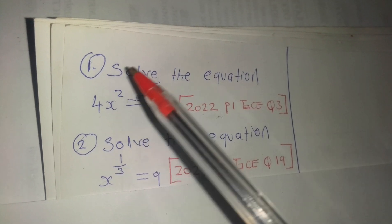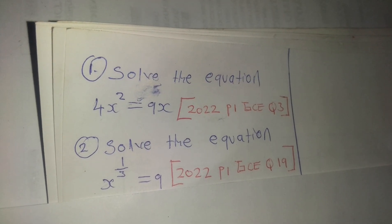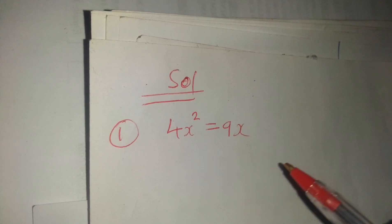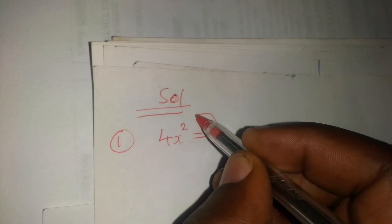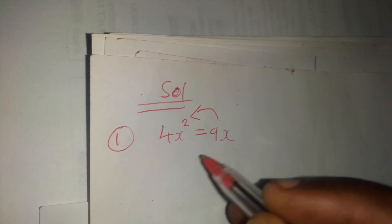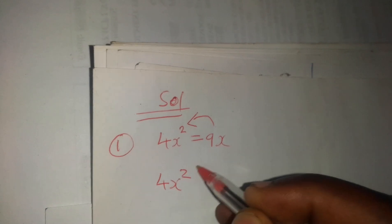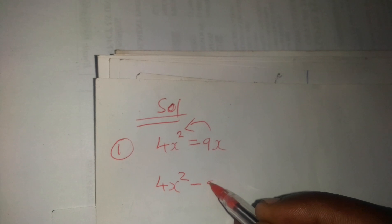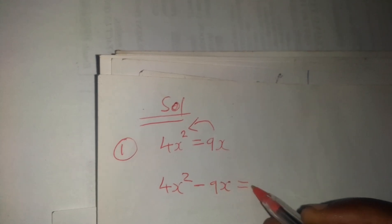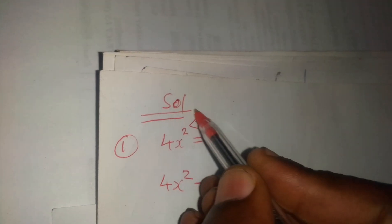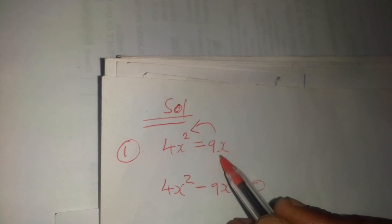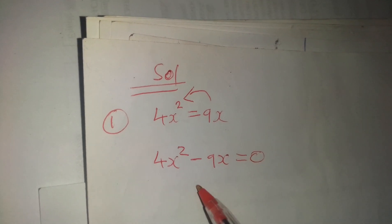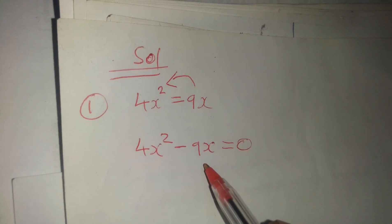Starting with Question 1. To solve this equation, first of all this 9 should go to the other side. So what we have is 4x squared, and when this 9 crosses the equal sign it will become negative 9x, then equals 0. Since when it crosses the equal sign there is nothing remaining, that nothing is represented by 0.